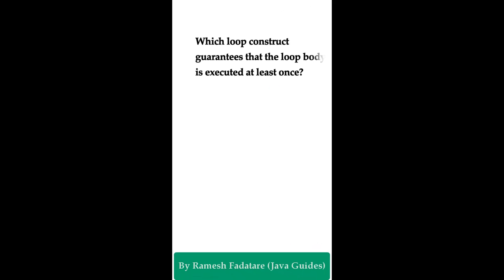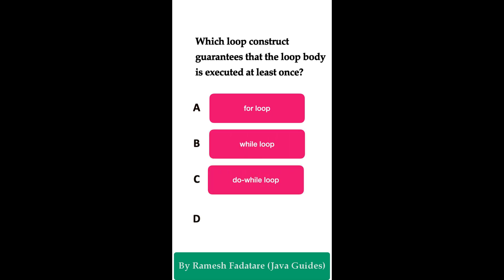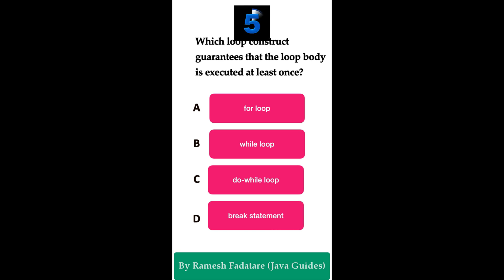Welcome to Java Quiz Series. Which loop construct guarantees that the loop body is executed at least once? Option A: for loop, Option B: while loop, Option C: do-while loop, Option D: break statement. You have five seconds to answer. The correct answer is Option C: do-while loop.